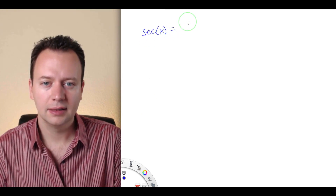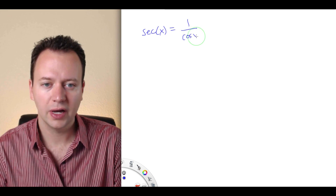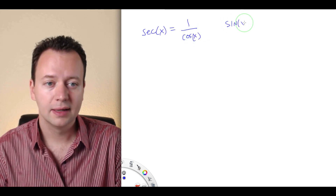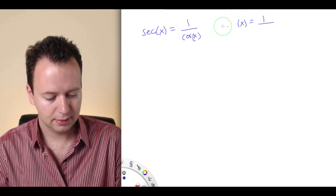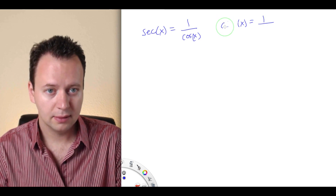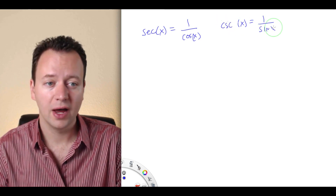Next we're going to take a look at the derivatives of the secant and cosecant functions — the reciprocal trigonometric functions. Secant of x is defined as 1 divided by cosine of x, whereas cosecant of x is defined as 1 over sine of x.